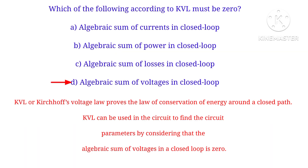Which of the following, according to KVL, must be zero? The algebraic sum of voltages in a closed loop is zero. According to KVL, this proves the law of conservation of energy.